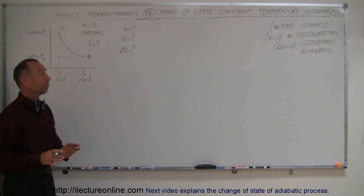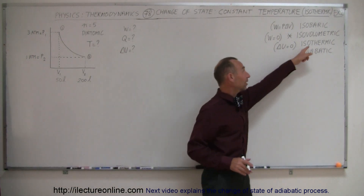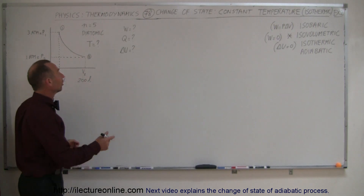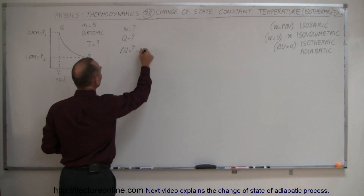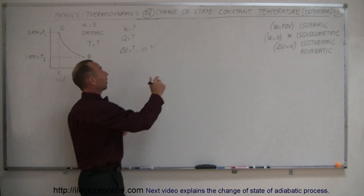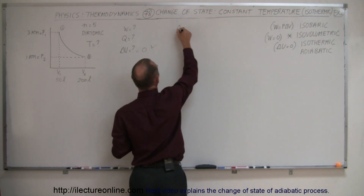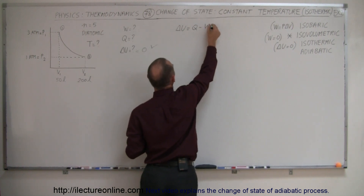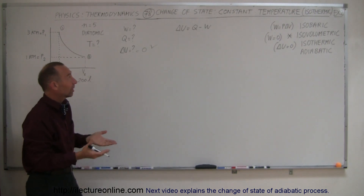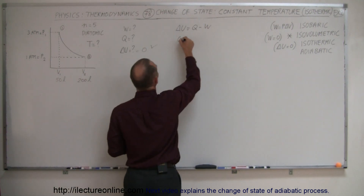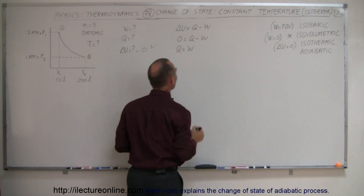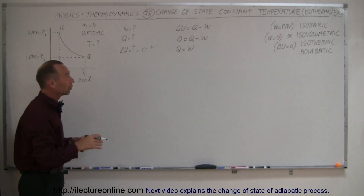Since this is an isothermic process, delta U is zero — the internal energy doesn't change because the temperature doesn't change. Right away we can say delta U equals zero. Now, from the first law of thermodynamics, the change in internal energy equals Q minus W, where Q is the heat added to the gas and W is the work done by the gas. Since delta U is zero, we get Q equals W — so once we find W, we find Q as well.